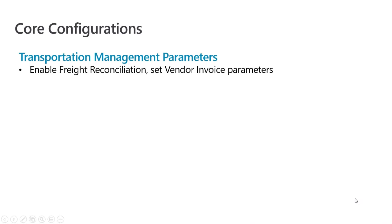Let's start with the core configurations. The first configurations we need are in our transportation management module level parameters. When you open that parameter form, there are a couple of things that need to be set for freight reconciliation. The first one is that the feature just needs to be enabled — there's a Boolean parameter that needs to be turned on if you're going to use the freight reconciliation functionality in transportation management.